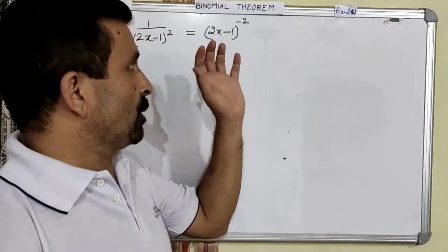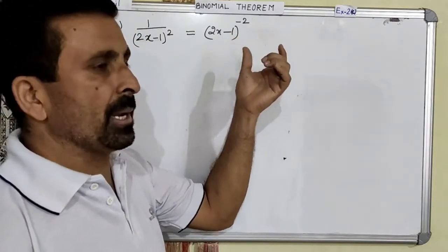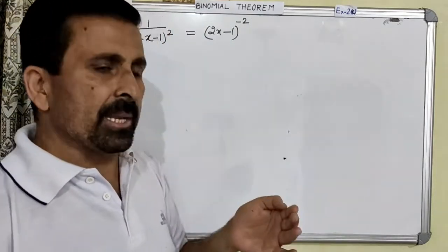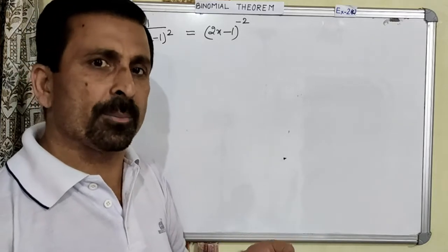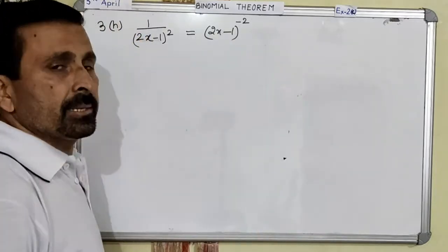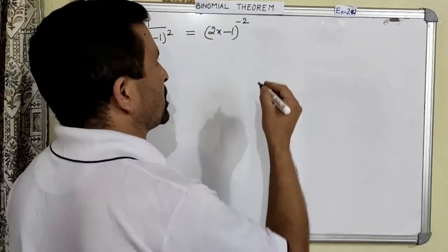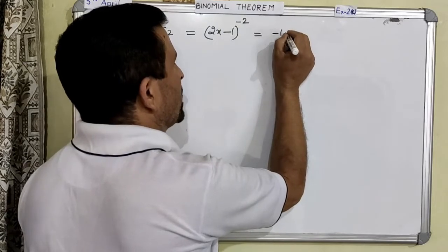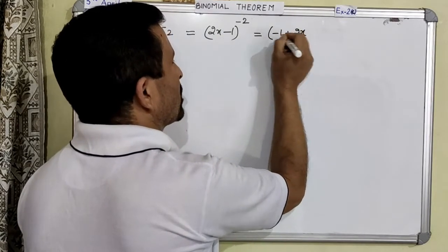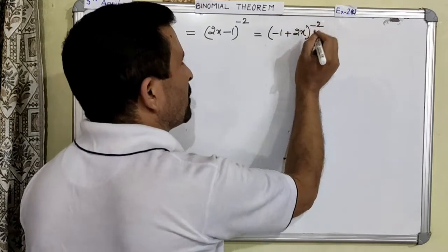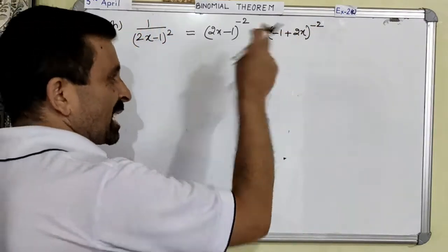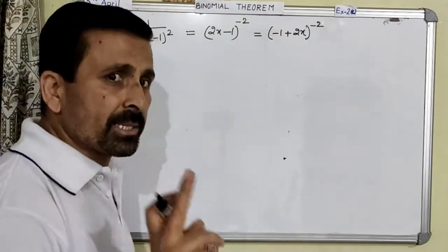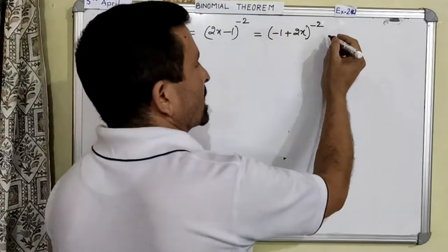It is because when you are expanding a binomial in negative index or fractional index, the first term is supposed to be 1. But our first term has gone into the second position, so we need to again make some changes in this question. In place of this, we can write this as minus 1 plus 2x, whole to the power negative 2. Still there is a problem — the first term should always be positive 1 only. Therefore we will take out this minus sign common from here.